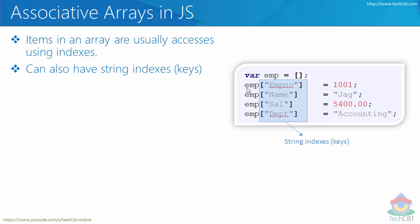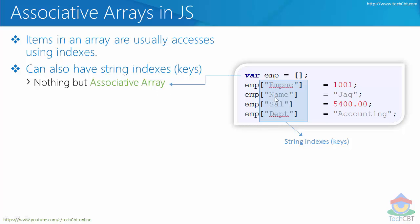For example, I can write emp.employeeNumber equal to 1001. This means I would like to place this value in a location identified by the name 'employeeNumber'. The location names or positions can be named in the form of strings. Those particular arrays which have string-based indexes are nothing but associative arrays — any array with string-based indexes can be considered an associative array.